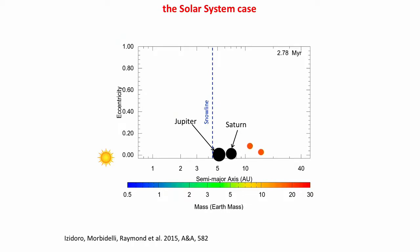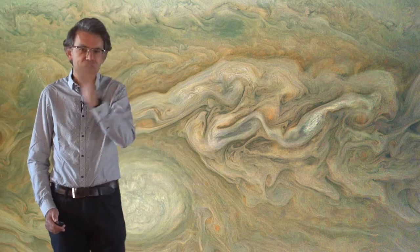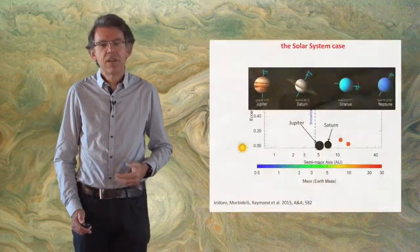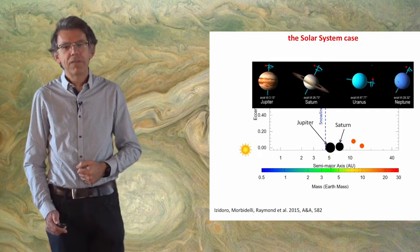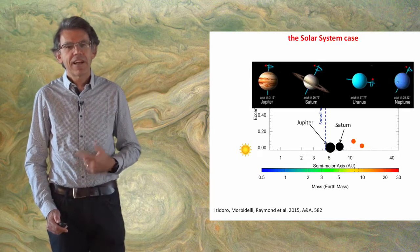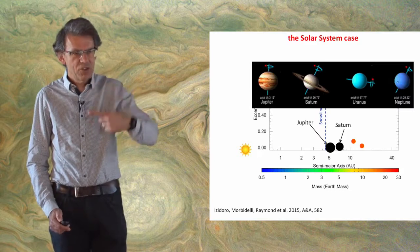This model explains two things: why we don't have close-in super-Earths—they've been stopped beyond the orbit of Saturn and prevented from migrating in—but it also explains how Uranus and Neptune formed. I think this is a good model because Uranus and Neptune are characterized by a spin axis that has a high obliquity with respect to their own orbit.